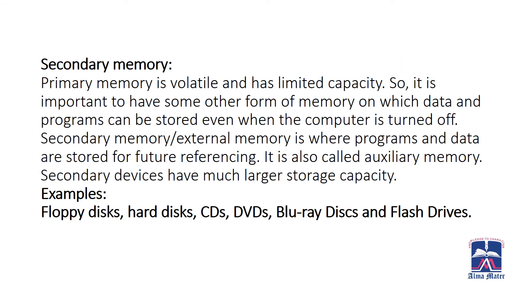Now we will discuss secondary memory. Primary memory is volatile and has limited capacity, so it is important to have another form of memory where data and programs can be stored even when the computer is turned off. Secondary memory, also known as external memory, is where programs and data are stored for future reference. It is also called auxiliary memory. Secondary devices have much larger storage capacity. Examples are floppy disks, hard disks, CDs, DVDs, Blu-ray disks and flash drives.